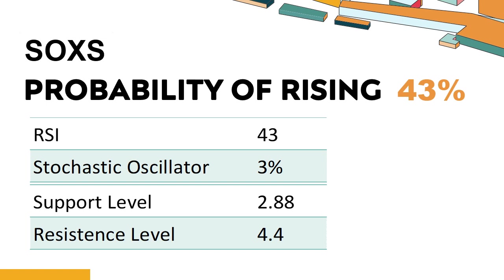Trend Outlook: SOXS has a 43% probability of rising stock price. When the probability of rising is lower than 50%, the probability of falling is relatively high. Combining multiple technical analysis indicators, SOXS has three bullish signals and five bearish signals. SOXS's short-term support level is 3.03; if it falls below 3.03, it will have a chance to test 2.88. The short-term resistance level is 4.02; if it breaks through 4.02, it will look up to 4.4.